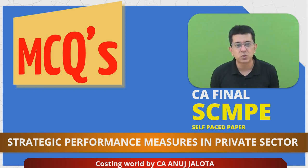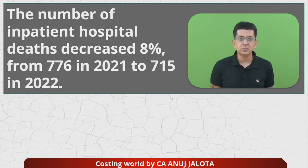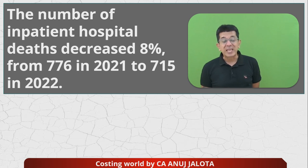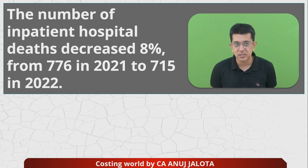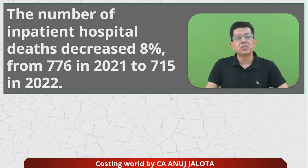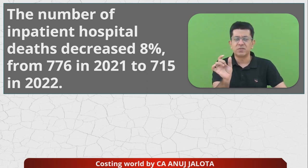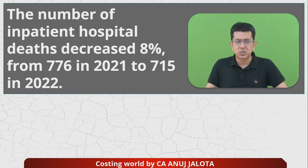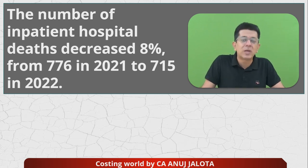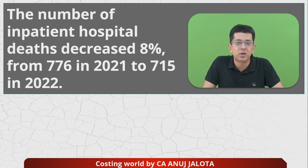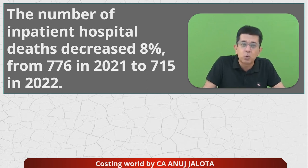So let's do these. The number of inpatient hospital deaths decreased by 8 percent — from 776 in 2021 to 715 in 2022. If you compute 776 to 715 on a calculator, it will come to approximately 8 percent. Now one small thing: those who don't know, there are two kinds of patients in every hospital — inpatients and outpatients.